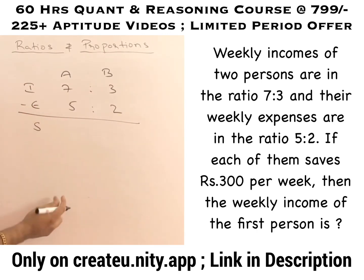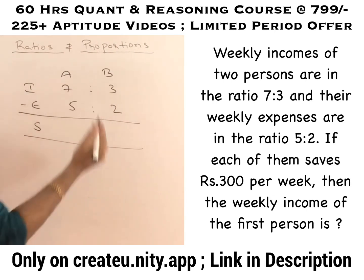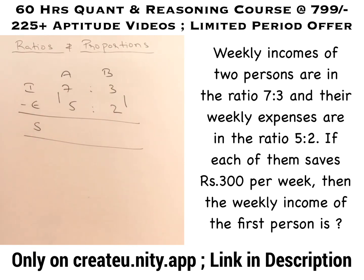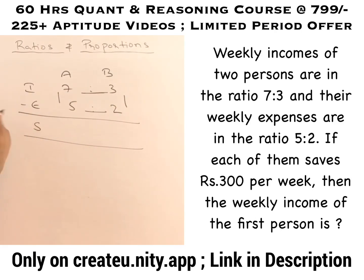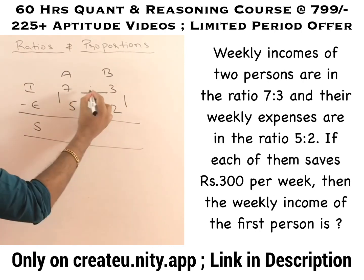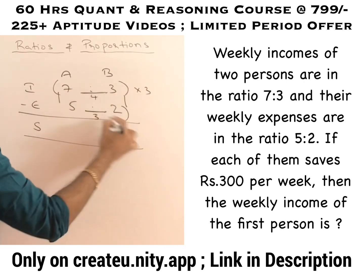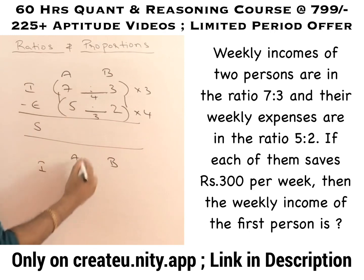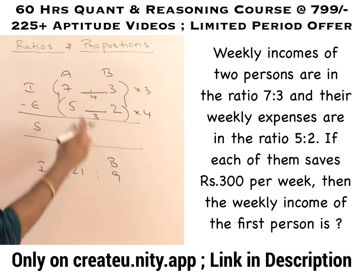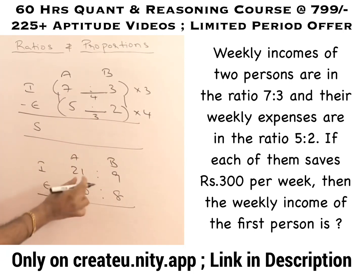Income minus expenditure equals saving, and that saving is equal for both — 300 and 300. The difference between incomes and the difference between expenses should be equal. Here the income ratio has a difference of 4 parts, and the expense ratio has a difference of 3 parts. To make them equal, multiply the income ratio by 3 and the expense ratio by 4. The new ratio of income becomes 21 is to 9, and the new expense ratio becomes 20 is to 8.